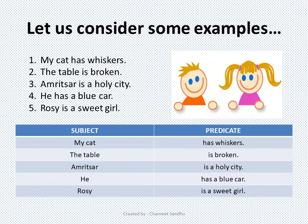Coming to the next example. 'Amritsar is a holy city.' Amritsar is the subject because we are talking about it, and 'is a holy city' is the predicate — it gives you additional information about the subject. 'He has a blue car.' As discussed earlier, a subject can be either a noun or a pronoun. Here 'he' is a pronoun which is our subject, and 'has a blue car' is the predicate.